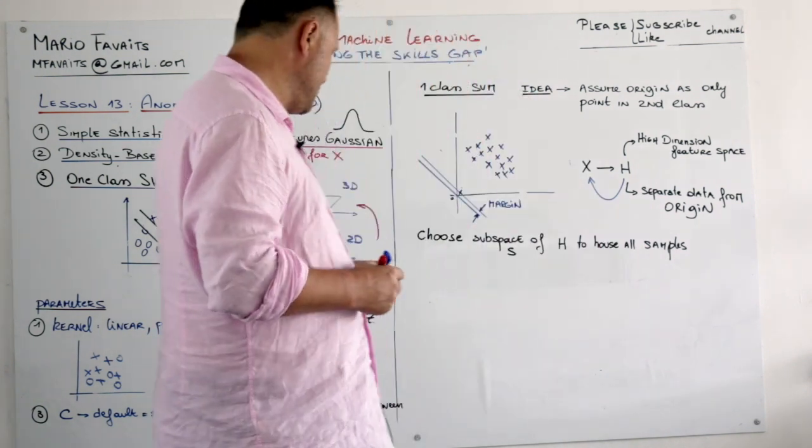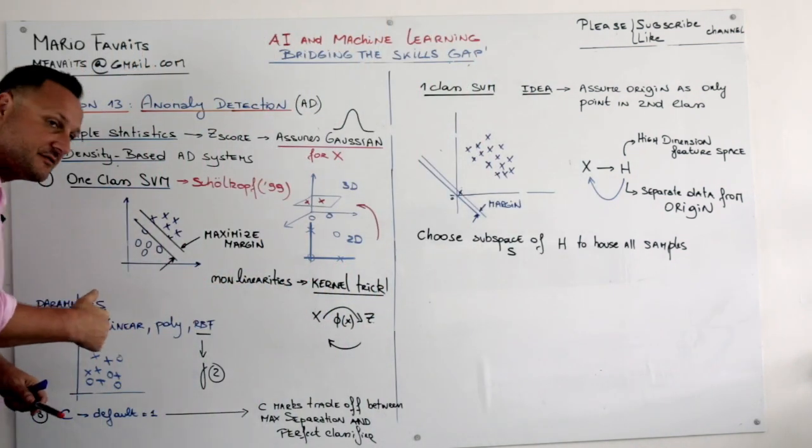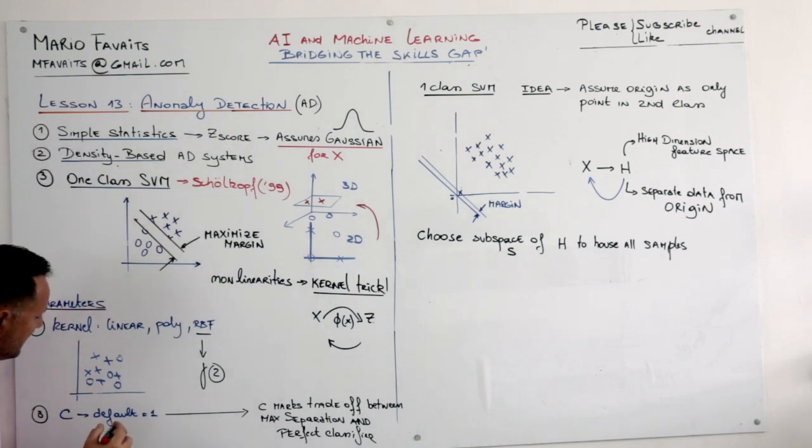And what is gamma? Well if gamma is very high you actually are able to go around all these circles here. Here we go. And this would be your boundary. This would be when gamma is high.